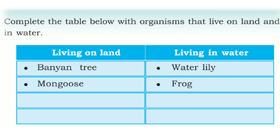My dear students, have you observed a pond and a paddy field in your locality? What type of plants and animals did you notice there? In a pond we can see a lot of fish and frogs. In a paddy field we can see grass and many agricultural plants.